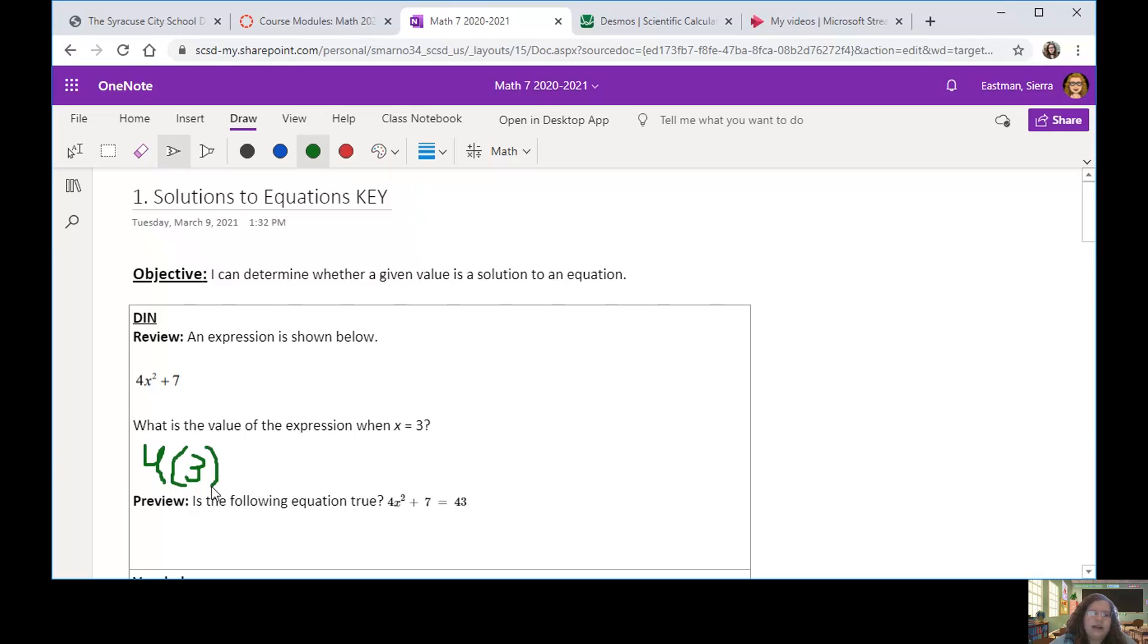So now it says 4 times 3 squared plus 7. And if we follow PEMDAS, we know that we have to complete our exponents first. So 3 squared is actually 9, and 4 stays the same, times 9. And then I'm going to be adding 7 at the end. If I complete that out a little bit more, 4 times 9 is 36, plus 7, which gives me the final answer, 43. This is an example of substituting a given value for whichever variable is in your expression and then finding that total value of the expression itself.